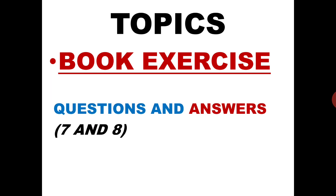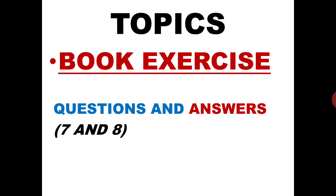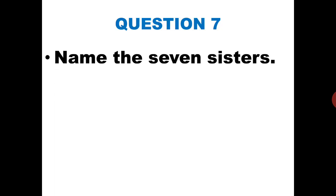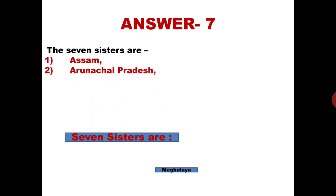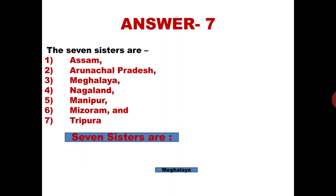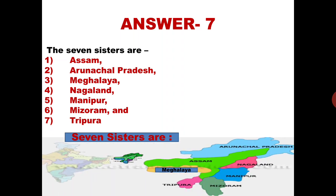So now let us start our question and answer. The question which we will take today is question number 7: Name the 7 sisters. So do you know what are the 7 sisters? The 7 sisters are Assam, Arunachal Pradesh, Meghalaya, Nagaland, Manipur, Mizoram and Tripura. These are the 7 states of North East India. We call them the 7 sisters. So if someone asks you to name the 7 sisters, the answer is these 7 states.